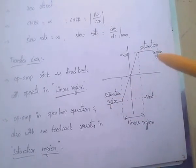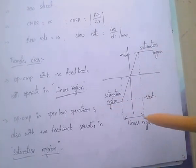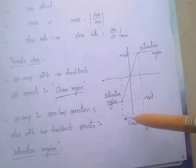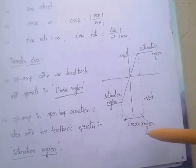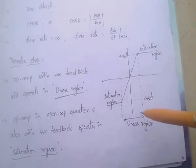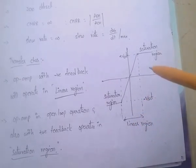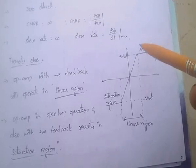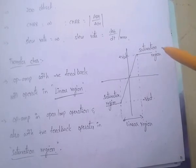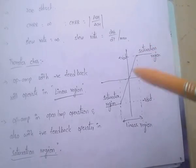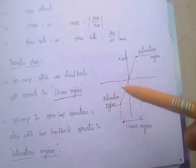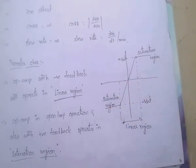An op-amp with negative feedback will operate in linear region. An op-amp with open loop operation and also positive feedback will operate in saturation region.